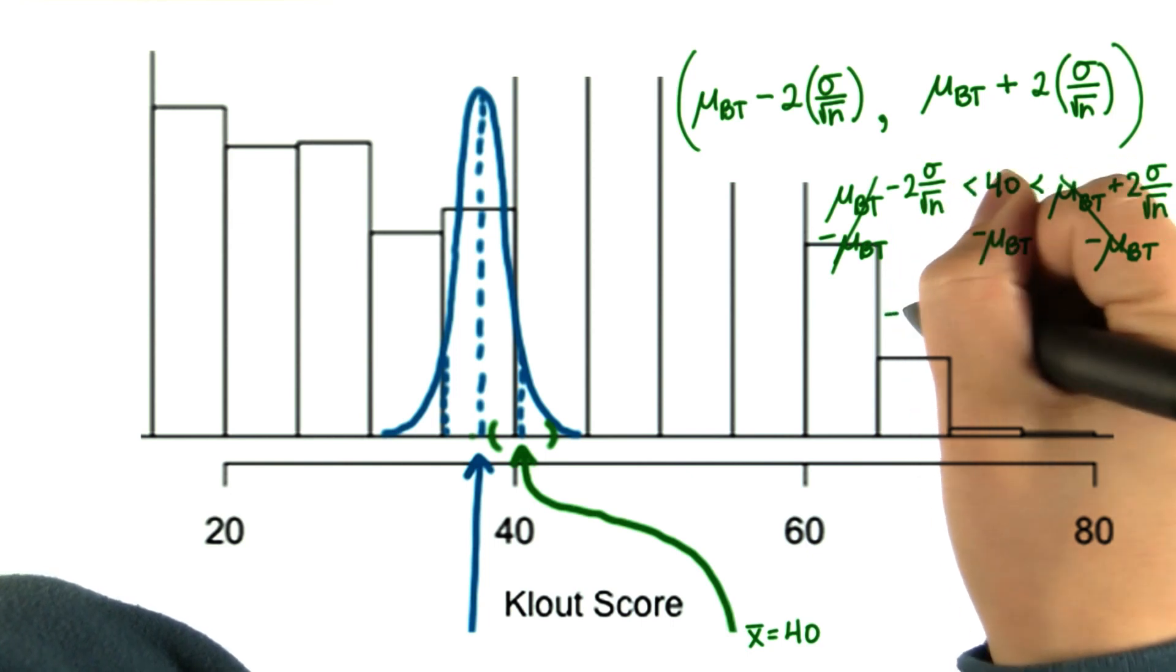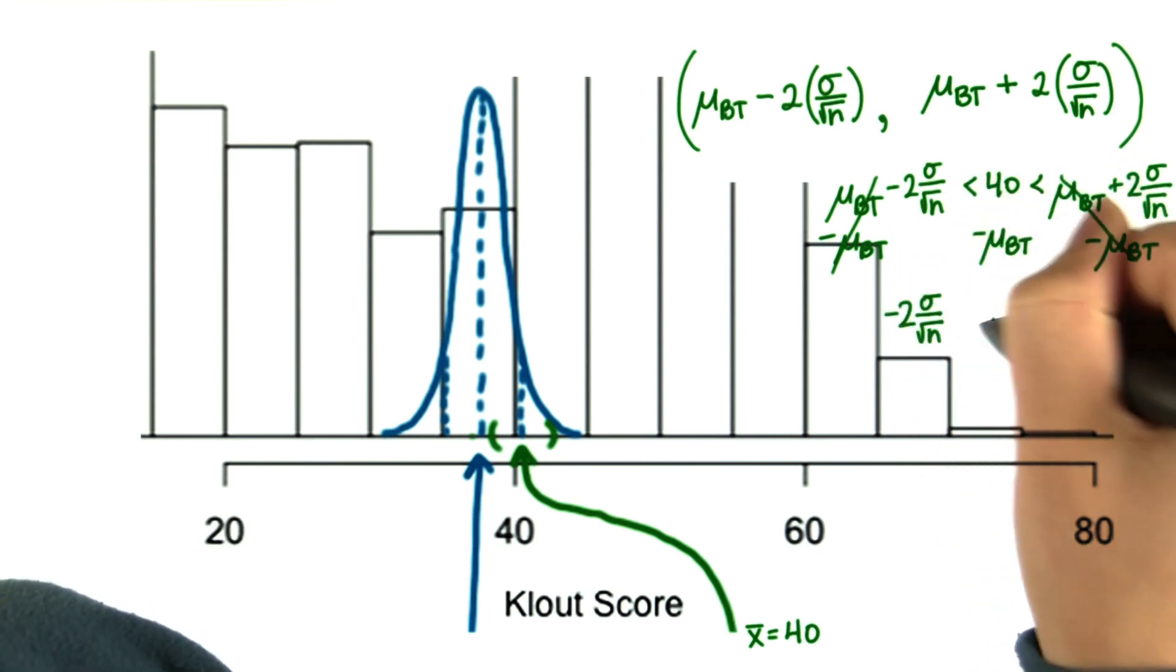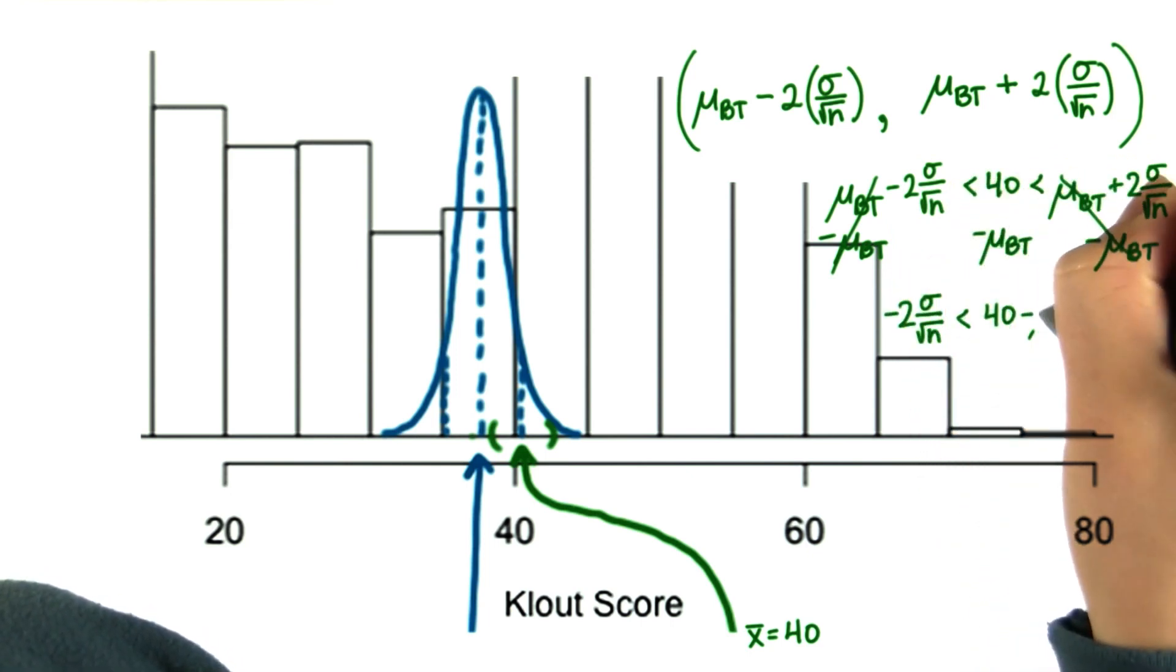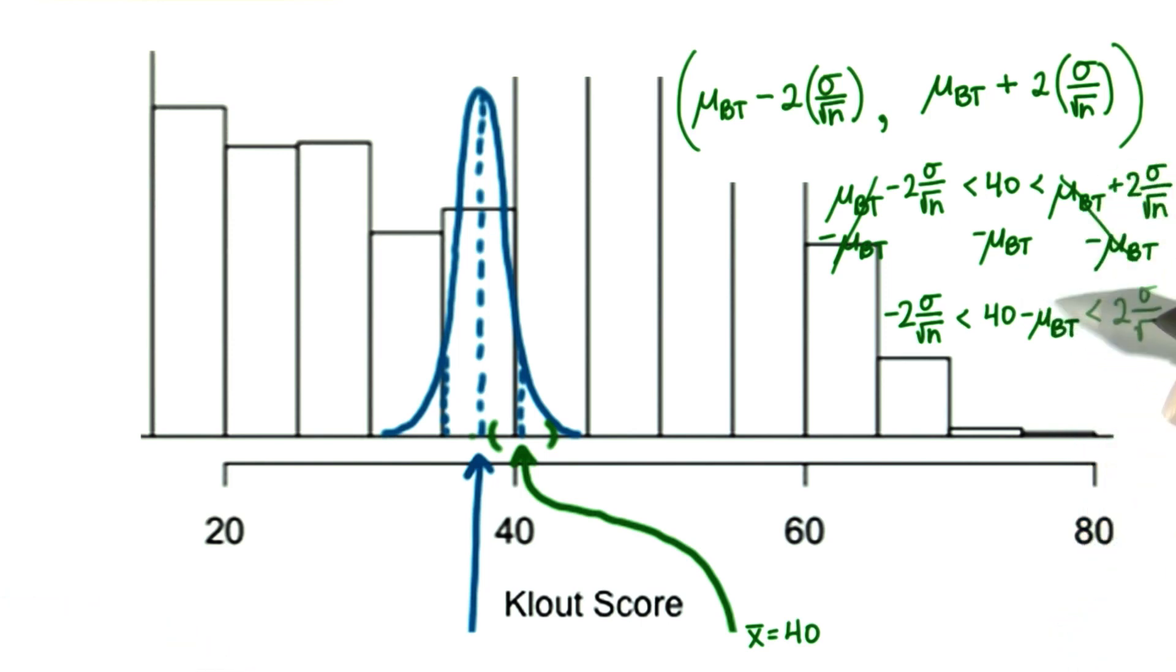So we're left with negative 2 times the standard error is less than 40 minus the population mean is less than positive 2 times the standard error.